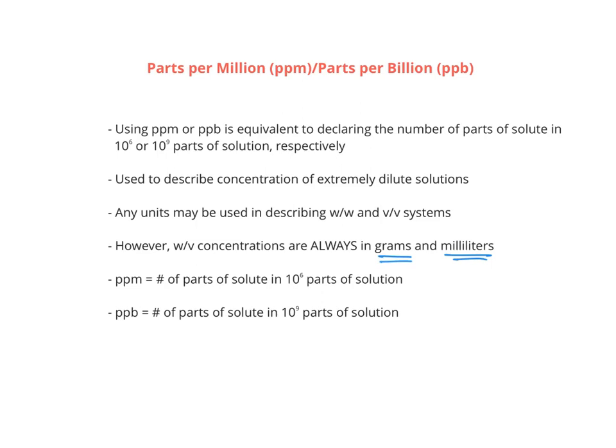And just a reminder, parts per million is the number of parts of solute in 10 to the 6th parts of solution, and parts per billion is the number of parts of solute in 10 to the 9th parts of solution.